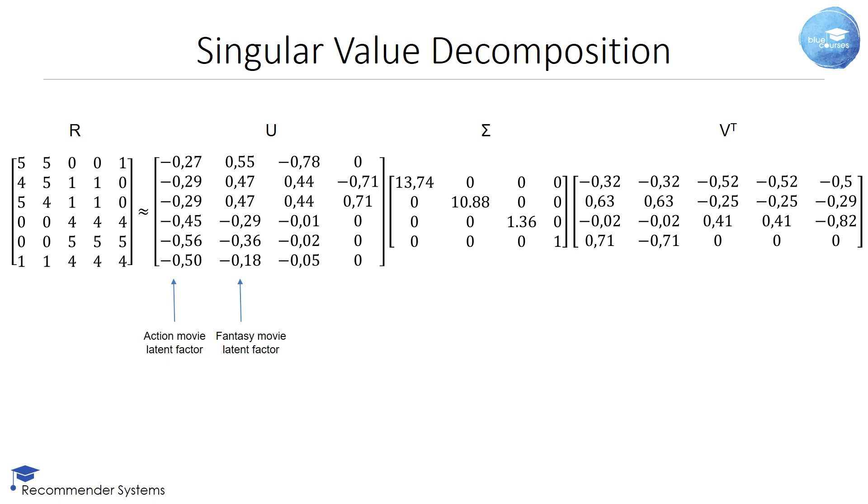Finally, the V matrix can be interpreted as the movie to latent factor similarity matrix. Let's look at its first two rows. In the first row, you can see a distinction between the first two values and the final three values. This corresponds to the action movie latent factor concept. Let's now look at the second row. You can see discrepancy between the first two values and the final three values. This corresponds to the fantasy movie latent factor concept.